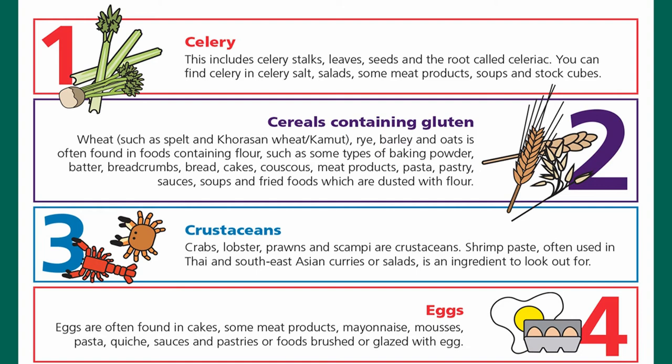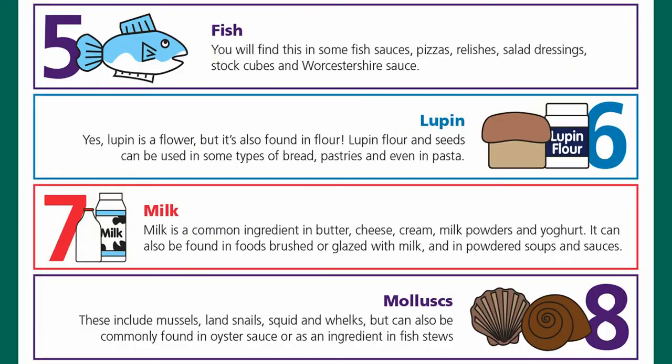Number four is eggs, often found in cakes, some meat products, mayonnaise, mousses, pasta, quiche, sauces, and pastries or foods brushed or glazed with eggs. Number five is fish — you will find this in some fish sauces, pizzas, relishes, salad dressings, stock cubes, and Worcestershire sauce, where the fish in question is anchovies.